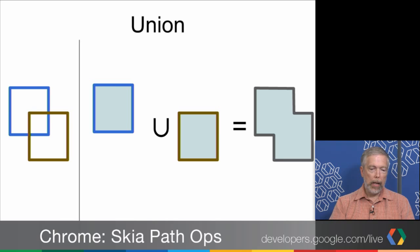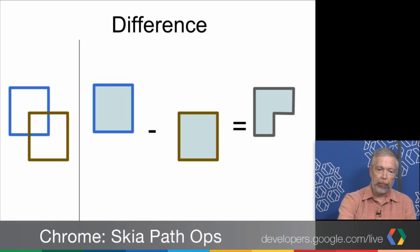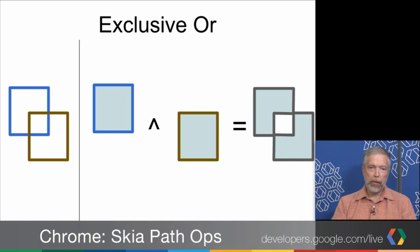A contour is a closed portion of a path, so it's a continuous closed loop. There's a pair of difference operators. This difference operator subtracts the dark green rectangle from the blue one. There's a reverse difference that would subtract the blue rectangle from the dark green one. For completeness, there's also exclusive OR, although this one isn't used very much.